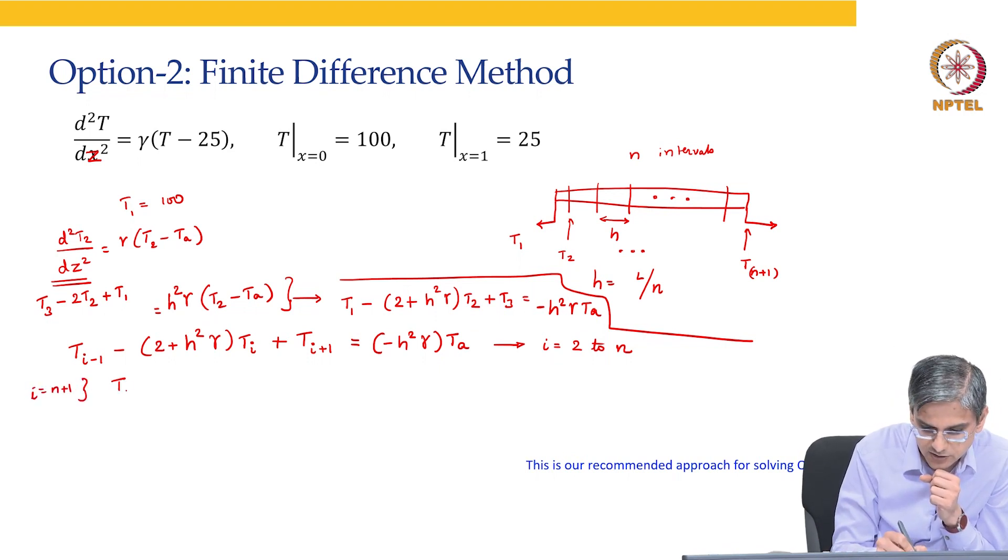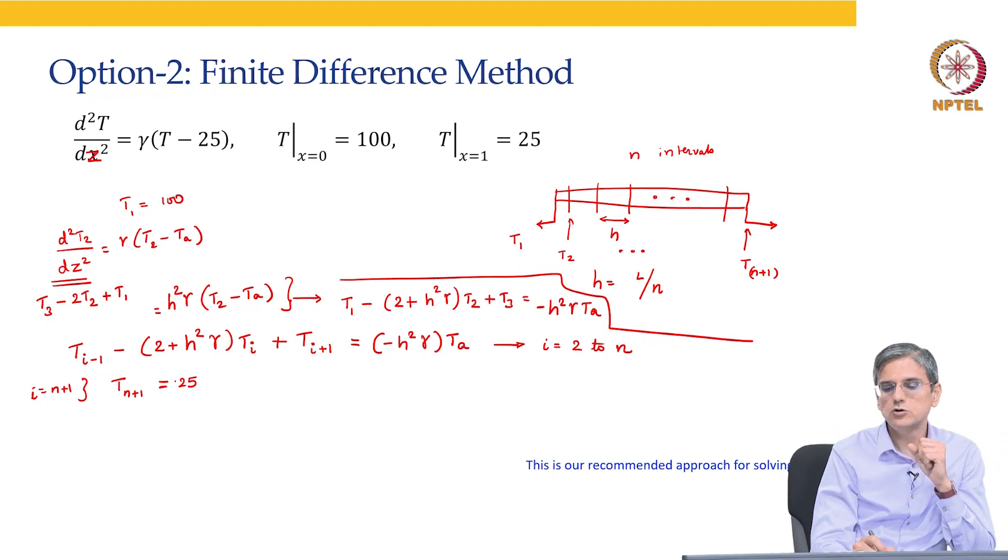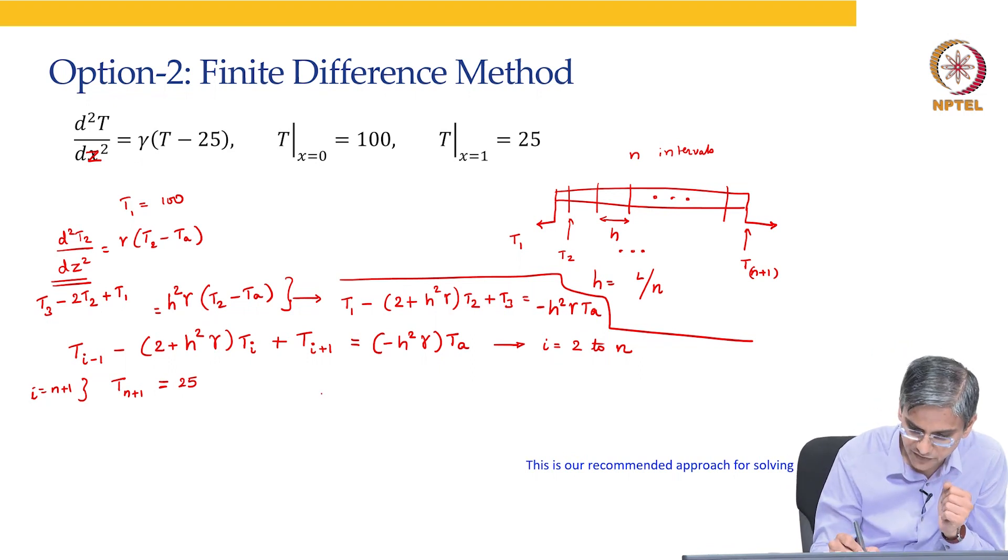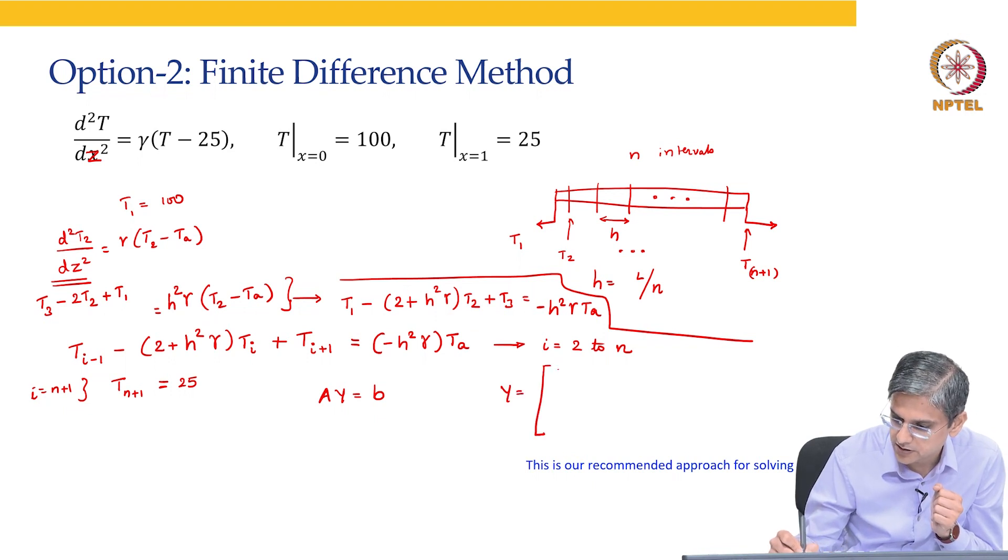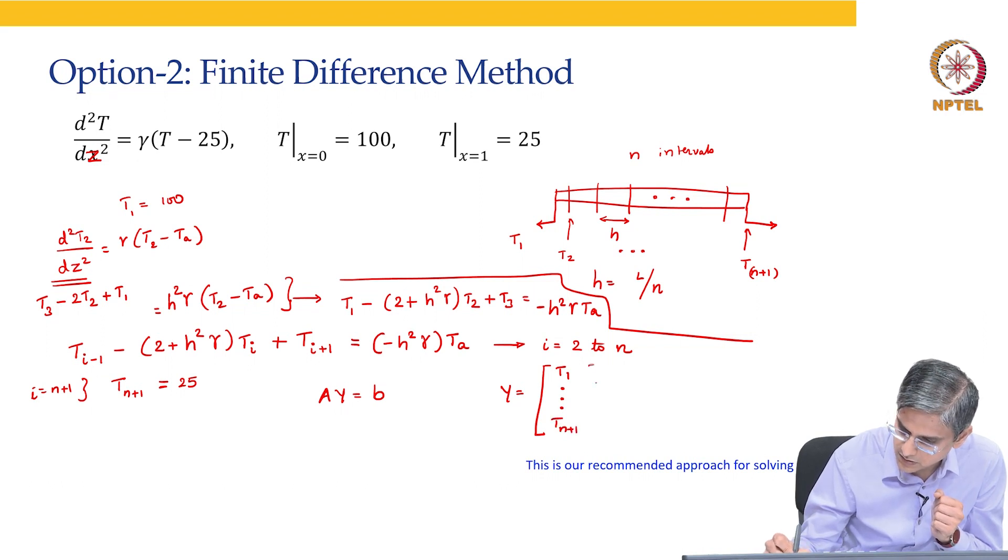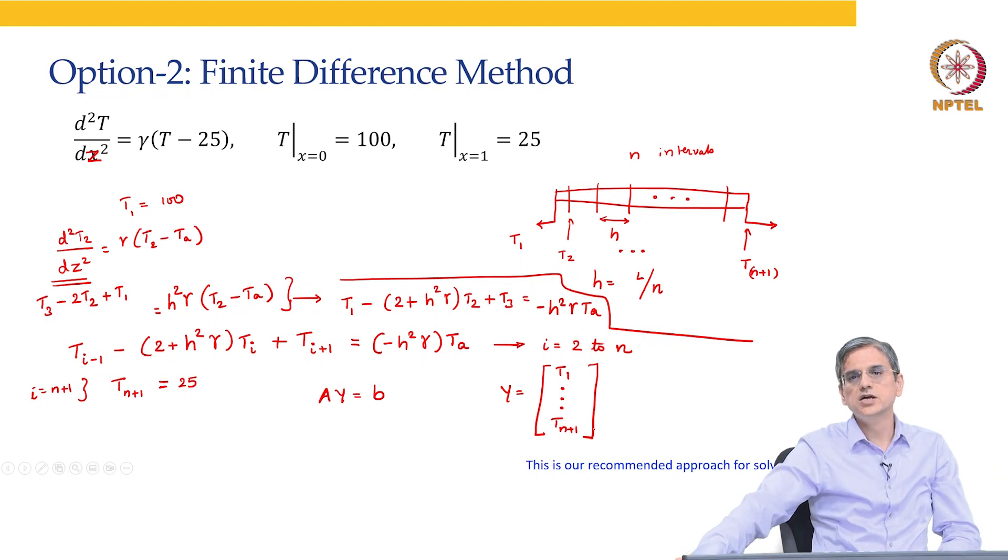So, this is a negative sign. This is valid for i equal to 2 to n. At i equal to n plus 1, T n plus 1 equal to 25. So, this is how we are going to have the setup and this will be of the form Ay equal to b.